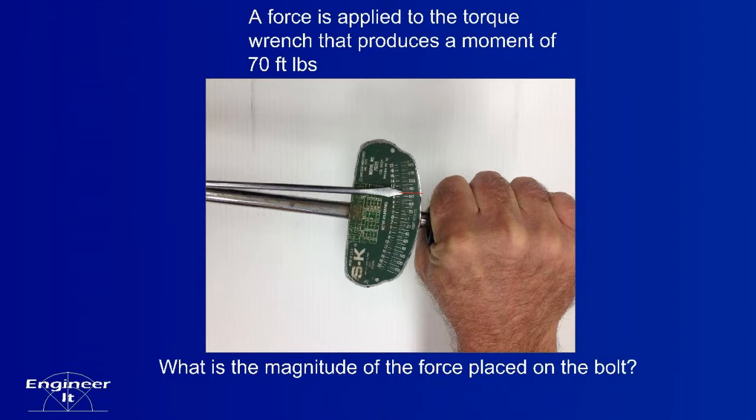A force is applied to the torque wrench that produces a moment of 70 foot pounds. What is the magnitude of the force placed on the bolt?